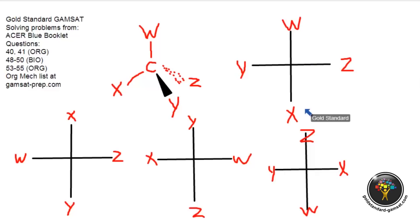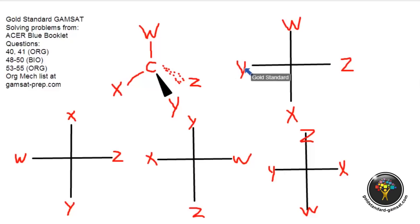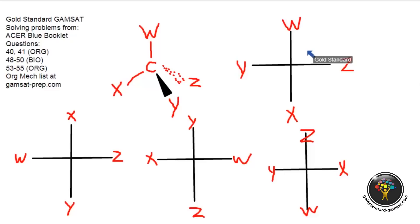When you look at structure one and compare it with structure four, you can fix the letter Y. Once you fix Y, if you bring W down here — it matches; X to the right — matches; Z up here — matches. So one and four match, meaning they are superimposable, and structure three is the one that does not work with any of the others — it is not superimposable. Structure three would be the answer. Now we'll move on to question 41 unless someone has a question about this.